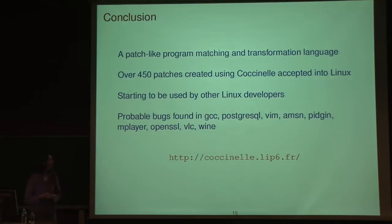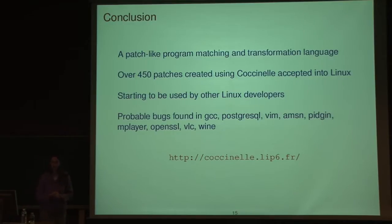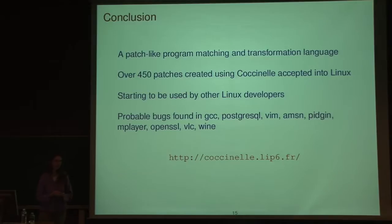In conclusion, we have developed a patch-like program matching and transformation language where you can write specifications very close to C code without a lot of different APIs to learn. We've used this to create over 450 patches submitted into Linux. Some other Linux developers have been using it, sometimes without asking us many questions, so I think it should be very easy to get started with. We've also looked in some detail at other software projects, especially OpenSSL, VLC, and Wine.